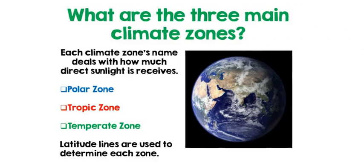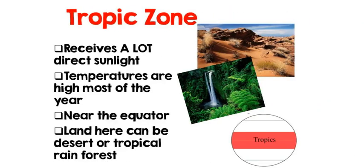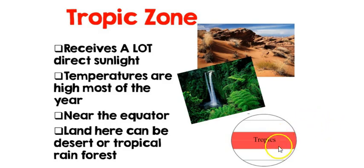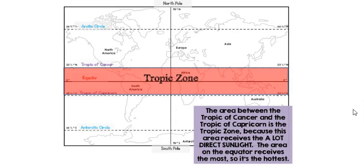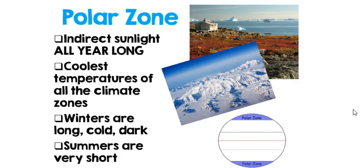We have three different climate zones: the polar zone, the tropical zone, and the temperate zone. The tropical zone is near the equator — it could be desert or tropical rainforest in that area. Notice how it sits in between the Tropic of Cancer and the Tropic of Capricorn, receiving very direct sunlight.